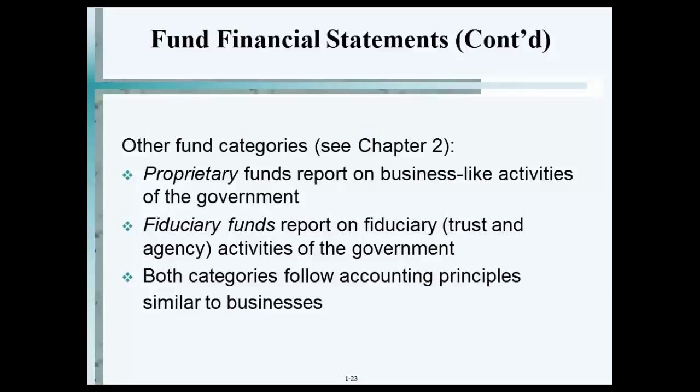So what are the three activities which governments are involved in? Governmental, proprietary — which is business type — and fiduciary. Those are the three.